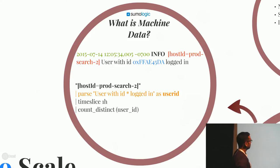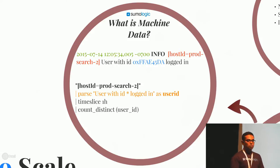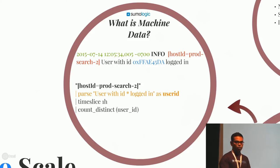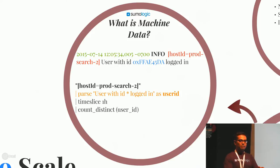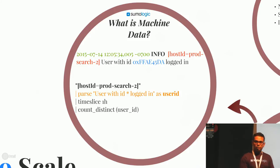A log line has a timestamp, a logging level, some keywords from context, and then it says — this is a typical application log line — 'user with ID some-hex-number logged in.' As a customer, you parse this information. You're looking for all log lines where host ID equals ProdSearch2, then parse 'user with ID * logged in' as user ID — giving some schema to your unstructured logs. You generate the user ID, do a time slice of one hour, bucket all the logs in that time range, and find out the distinct number of user IDs logging into the system. That is a typical search use case.